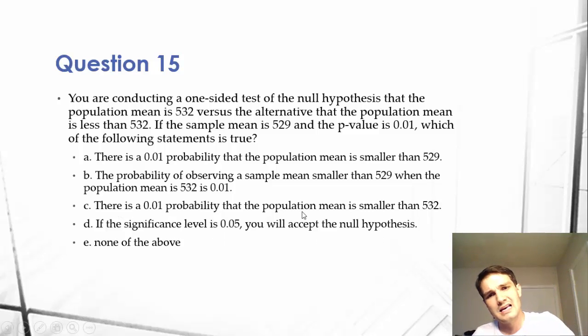There is a 1% probability that the population mean is smaller than 532. This has nothing to do with this information at all. Now this is about rejecting and accepting the hypothesis and it's about the sample.